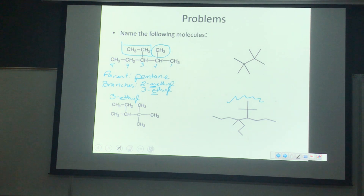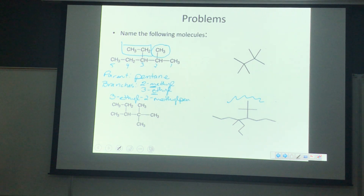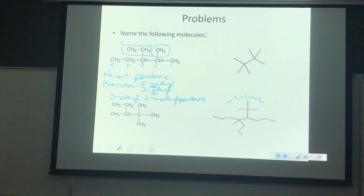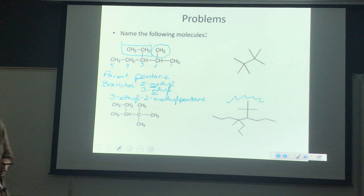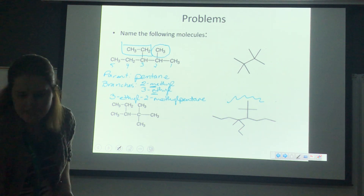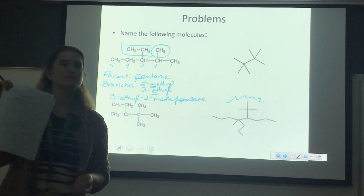We did the bottom one on the bottom right-hand corner. So let's go back to the one at the top left and take a look at that and name it. The first thing we're going to want to do is find the parent chain, and that's going to be the longest continuous chain.